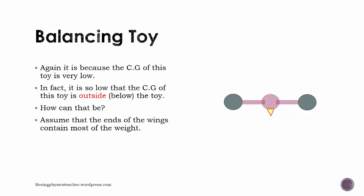This is the bird's head, this is the beak, and these are the wings. You find that the one trick of this toy is that the end of the wings contain most of the weights. If you have this configuration, the center of gravity of this particular toy is right at the center.